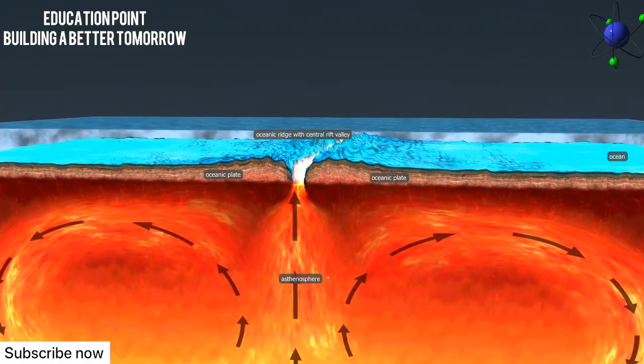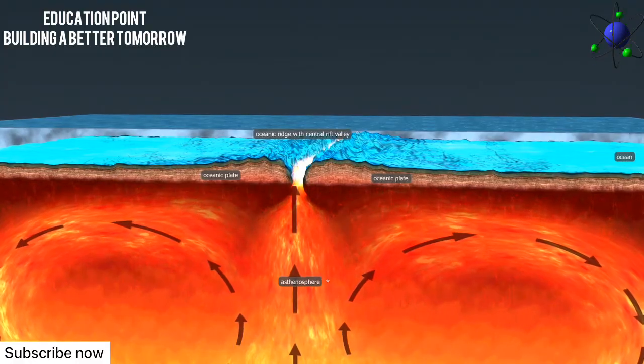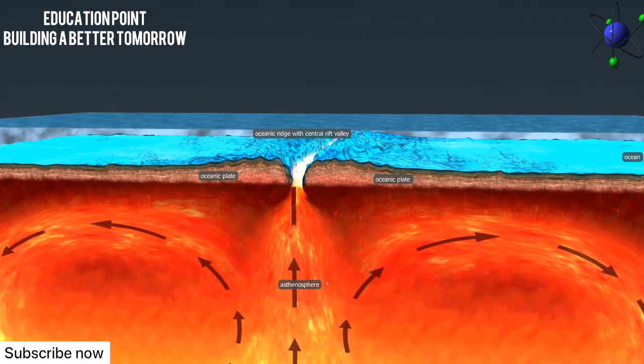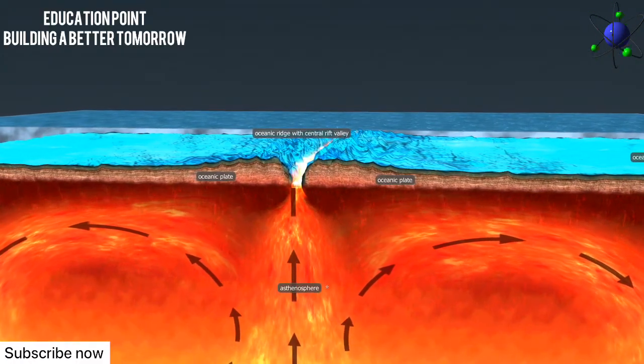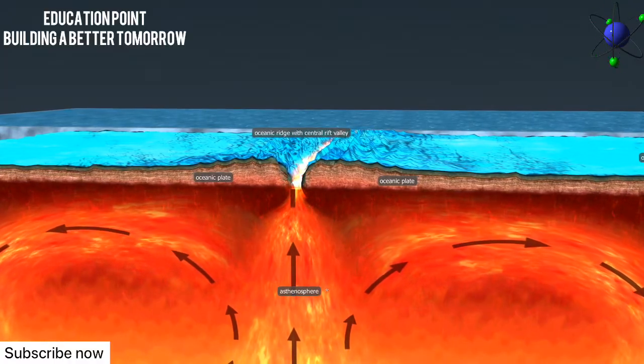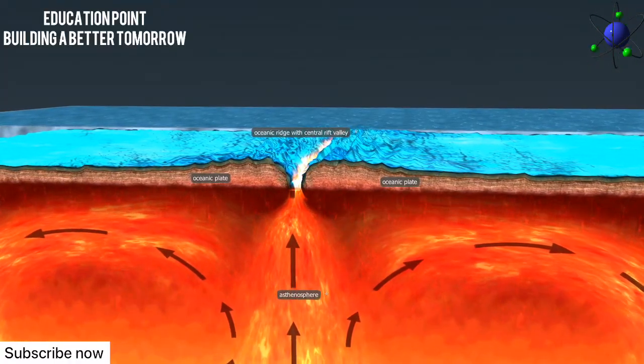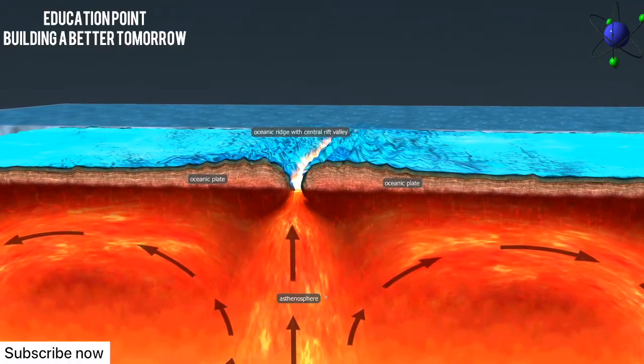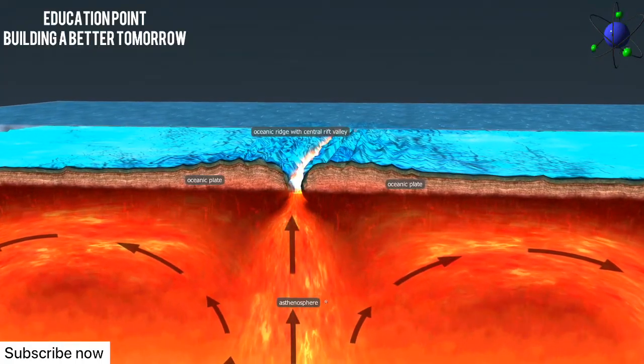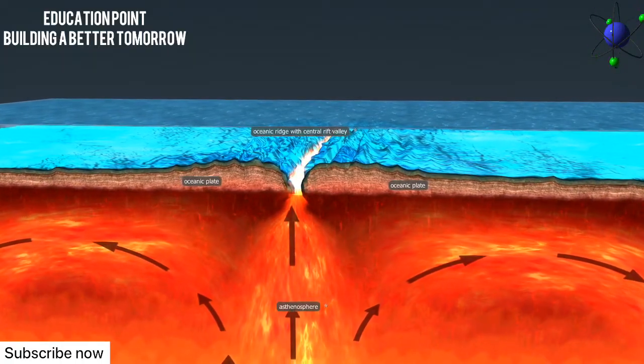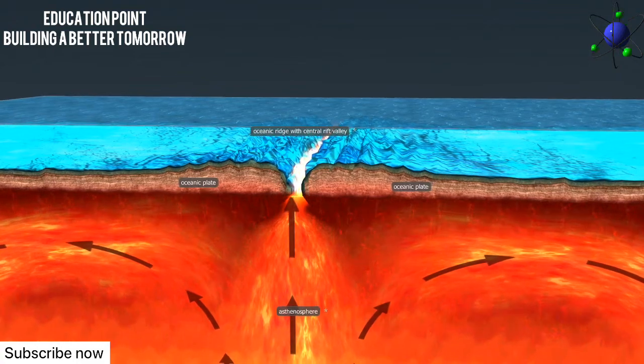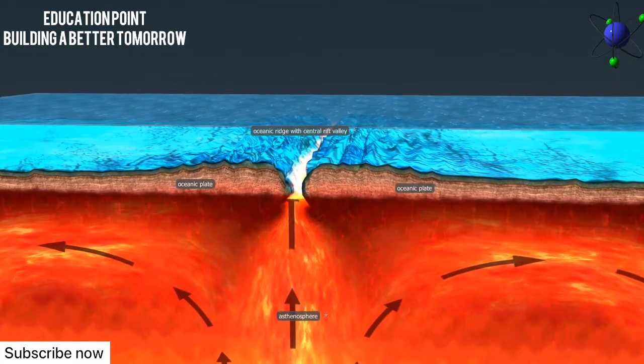Mid-ocean ridges represent an example of divergent plate boundaries. As magma, that is molten rock, rises from the asthenosphere and penetrates the oceanic lithosphere, it reaches the surface, where it cools down and solidifies, forming new lithosphere at the edge of the crack. That is how mid-ocean ridges are formed.